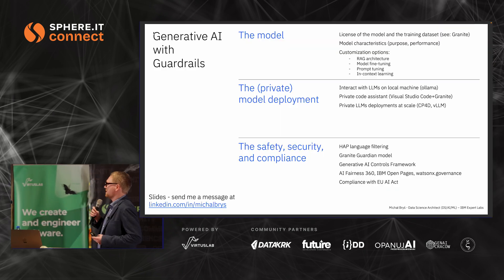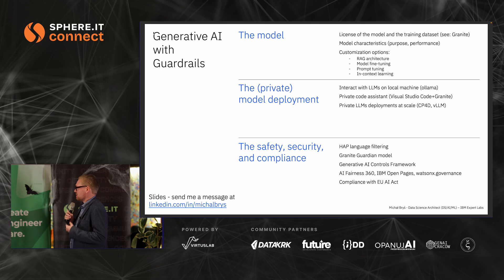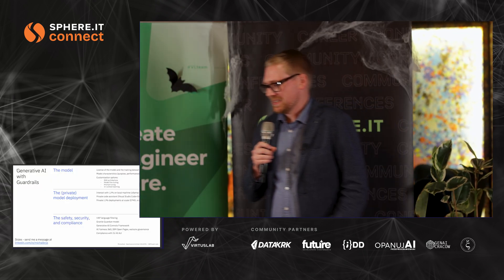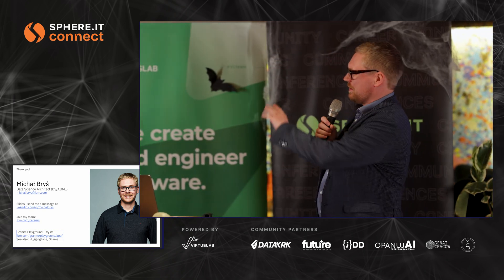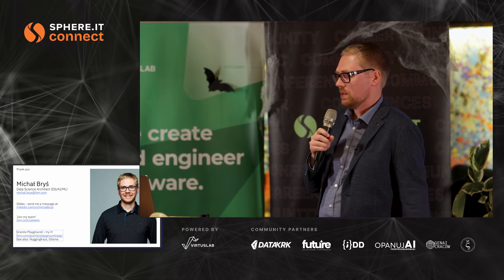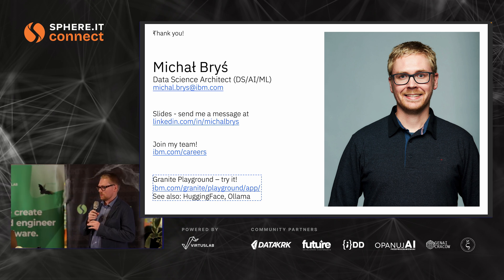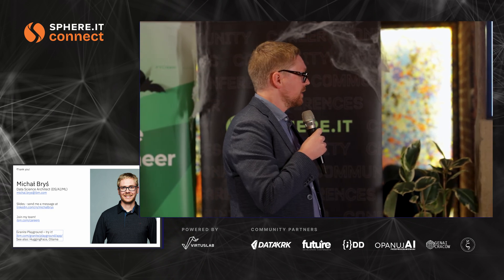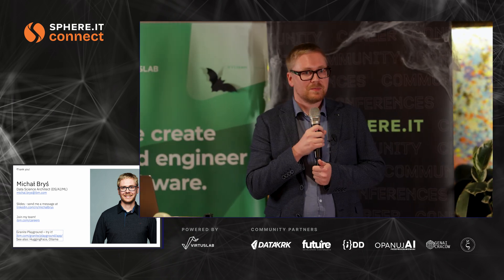Going straight to the point — the summary. To make your Generative AI application more secure and robust, I recommend checking three aspects: the model, the model deployment, and the safety, security, and compliance aspect. That was a quick one. For contact, if you like the slides, ping me on LinkedIn and I'll send you the PDF with active links. We've also got a great team in Kraków. This week we opened the Granite playground — you can navigate to the page where the Granite model is exposed publicly, no registration, no credit card, but limited to 20 prompts per day. You can also check out the model through Hugging Face or Ollama.